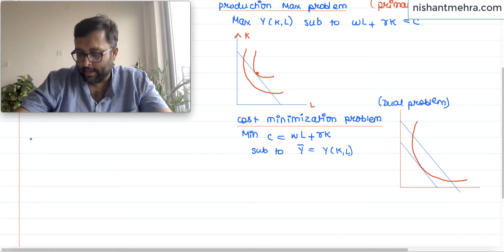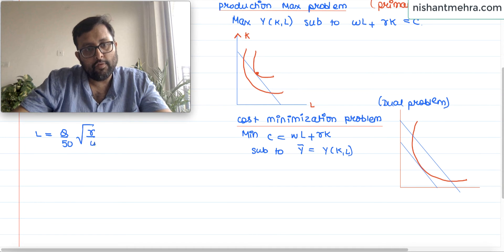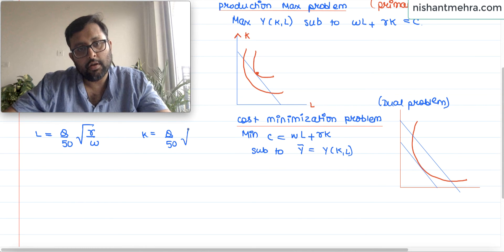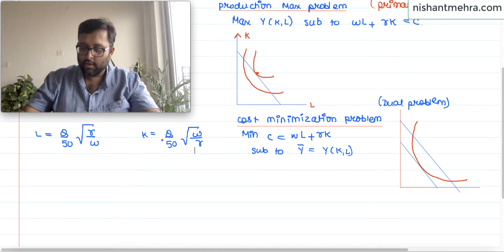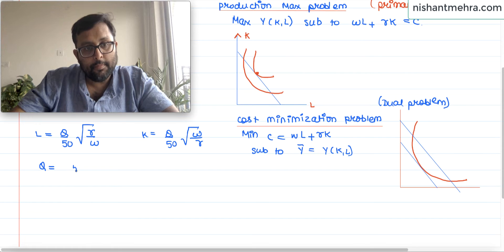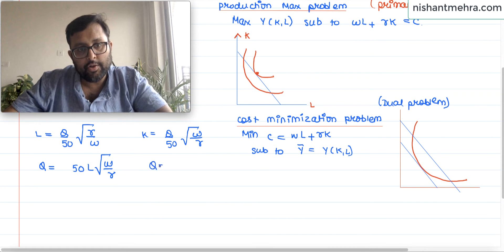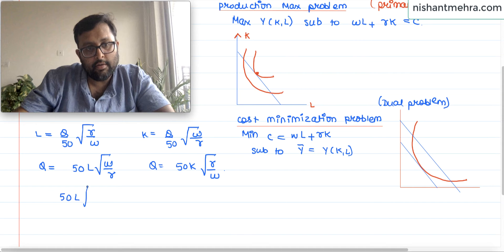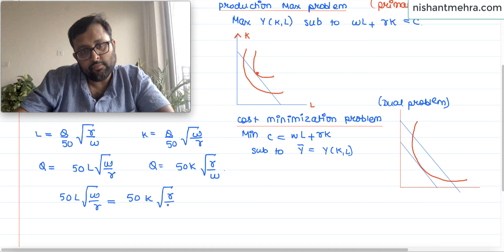You are given L = Q/50 · √(R/W) and K = Q/50 · √(W/R). What you can do is write everything in terms of Q. From the L equation: Q = 50L · √(W/R). From the K equation: Q = 50K · √(R/W). Since the Q's are equal, you can write: 50L · √(W/R) = 50K · √(R/W).